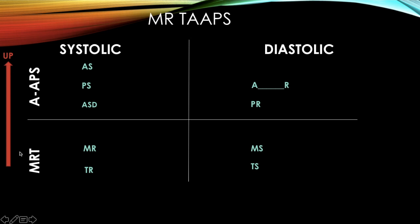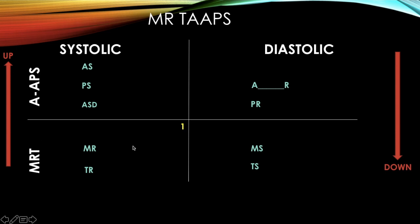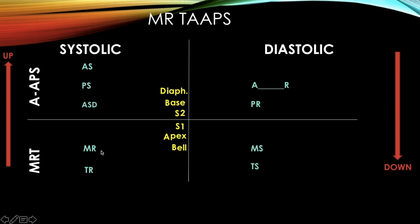Systolic murmurs radiate upward and diastolic murmurs radiate down. Remember: 1 comes before 2, A comes before B, and B comes before D. This represents your S1 heart sound, S2 heart sound, apex, base of the heart, bell of your stethoscope, and diaphragm. The mitral and tricuspid valves form S1, while the pulmonic and aortic valves form S2. The lower four murmurs are best heard at the apex and with the bell; the upper murmurs are best heard at the base and with the diaphragm.